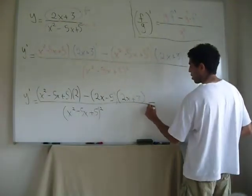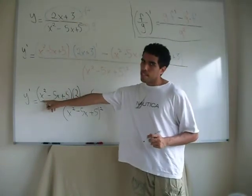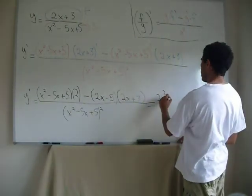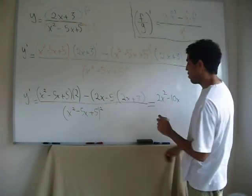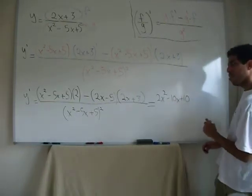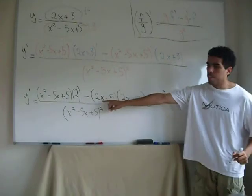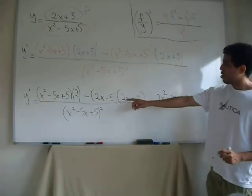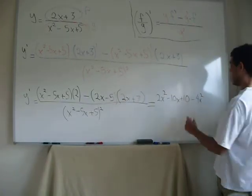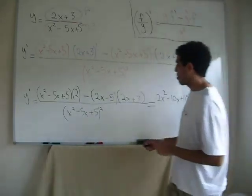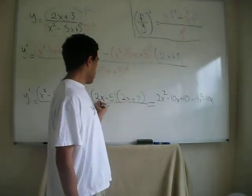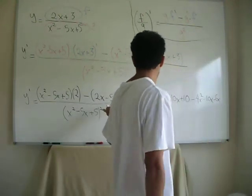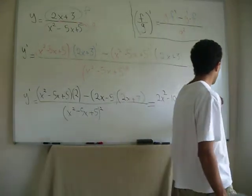Let's do this real quick. 2 times x squared is 2x squared. 2 times minus 5x is minus 10x. 2 times 5 is 10. Minus: 2 times 2x is 4x squared. 2 times 2x is 6x — negative, so it's minus 10x. 3 times 2x is 6x, negative. And 3 times minus 5 is 15, so minus plus 15.